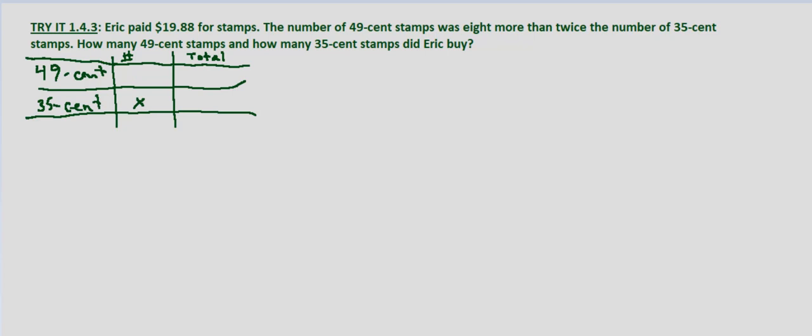Well then, the number of 49-cent stamps is eight more than twice the number of 35-cent stamps, or 2x plus 8.